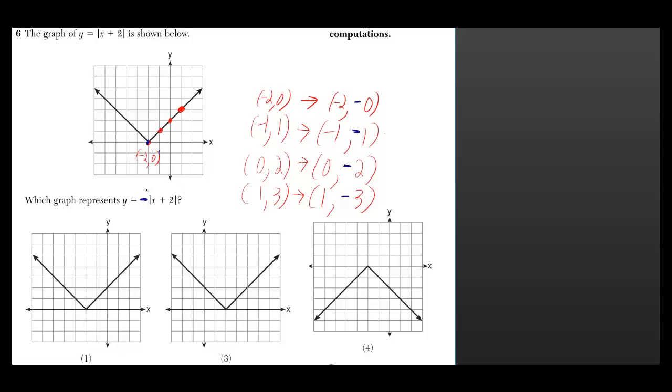If you look at the graph, you get (-2, 0). Well, if you change that to (-2, -0), you actually still have the same point, so on our new graph we still have that point.